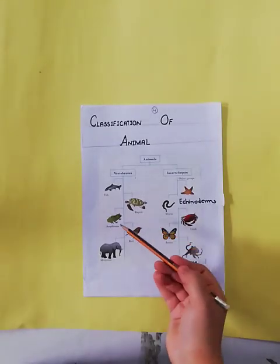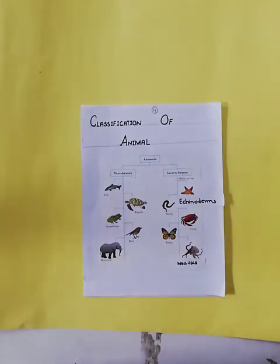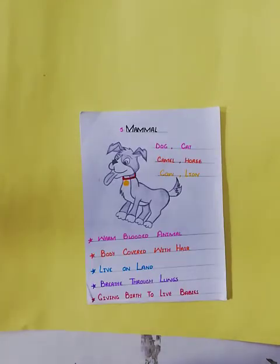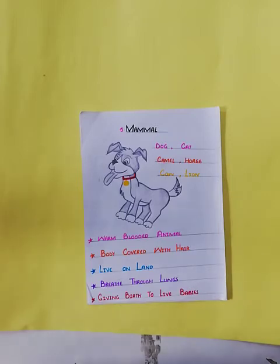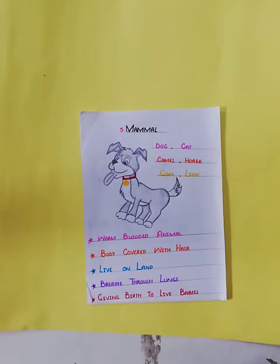Fish, reptiles, amphibians, and birds reproduce by laying eggs, but mammals can give birth to live babies — they do not lay eggs. Mammals are warm-blooded animals; their bodies are covered with hairs and they mostly live on land. They breathe through their lungs, give birth to live babies, and mammal mothers nourish their young ones.